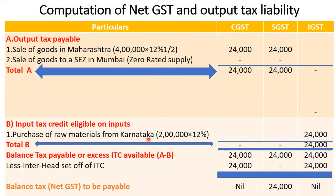For the raw materials purchased from Karnataka: her business is in Mumbai and she is purchasing from Karnataka, so it is an interstate transaction. On two lakh at 12 percent, we record 24,000 only in the IGST column — not in CGST or SGST — since it is an interstate transaction. So total input tax credit available is 24,000 under IGST, and nil under CGST and SGST. This 24,000 IGST credit must first be utilized against IGST liability, then against CGST, and any remaining balance against SGST.